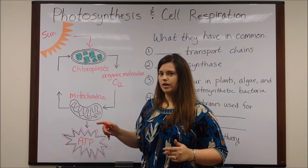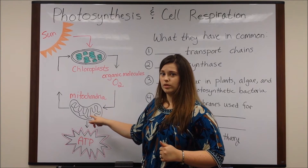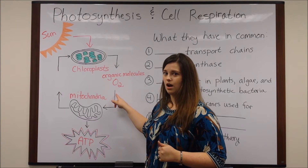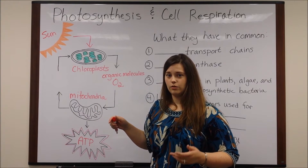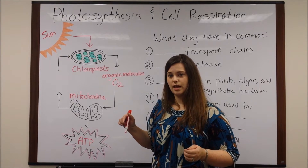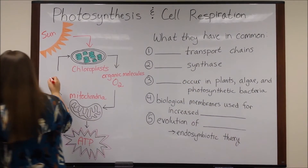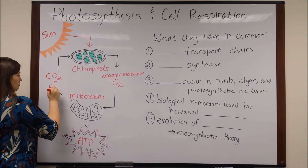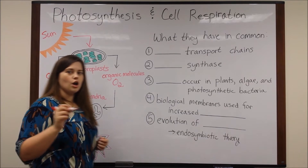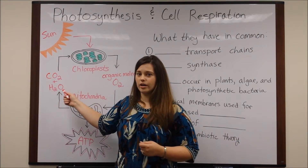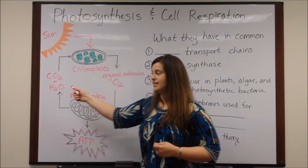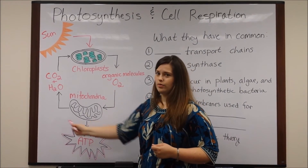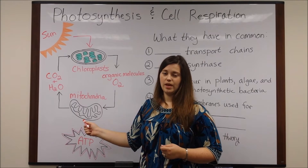Now, where does the cycle part come in? In mitochondria, with cell respiration, once they have used the organic molecules and the oxygen, there are two different products that are formed: carbon dioxide and water. Carbon dioxide and water are the two reactants that chloroplasts need to carry out photosynthesis. So that is how this is one big cycle.